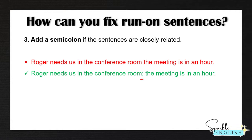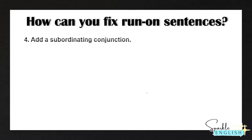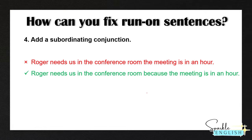Remember, when you use a semicolon, you do not capitalize the next word — keep it in lowercase, unless of course it's a word that always begins with a capital letter. The fourth way to fix a run-on sentence is to add a subordinating conjunction. So: 'Roger needs us in the conference room because the meeting is in an hour.' Subordinating conjunctions are a bit more powerful than coordinating conjunctions, and we do not need to use a comma in this case.